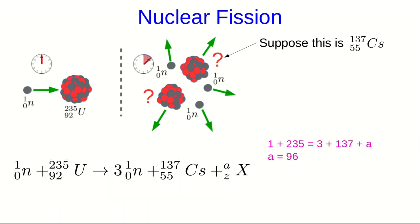So we do that. We have 236 total nucleons involved here, and that allows us to solve for A, which is 96. And we have 92 protons, and that allows us to solve for Z, which is 37.